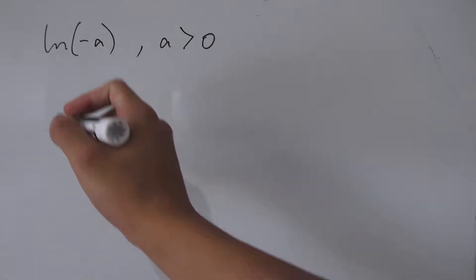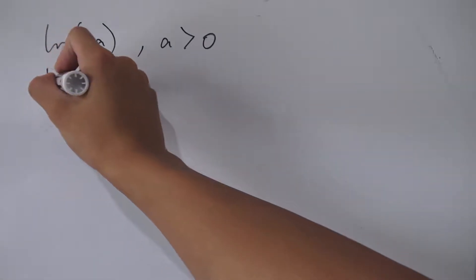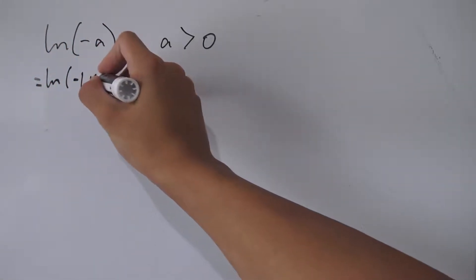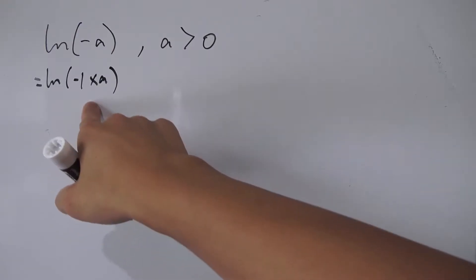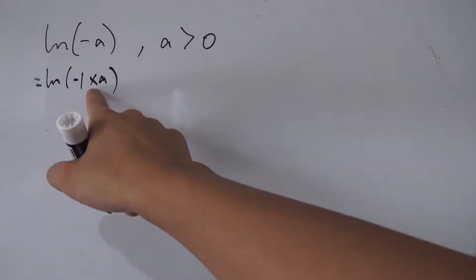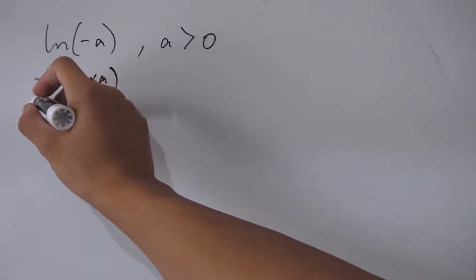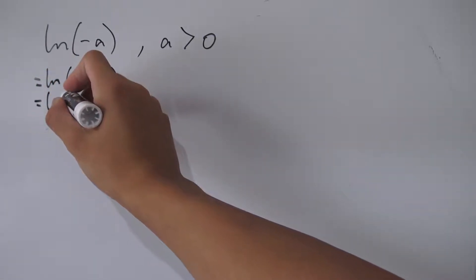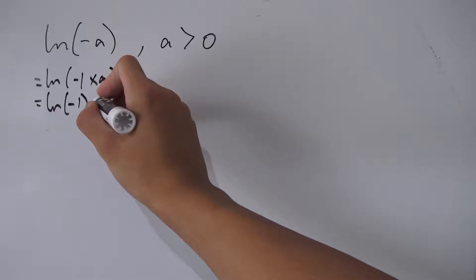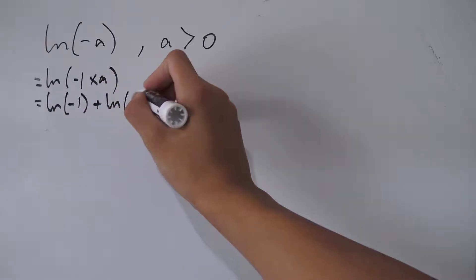Let's take a look at this natural log of negative a. Notice that this is the same as natural log of negative one times a. And if you know some natural log properties, you know that you can turn the multiplication of the argument into the addition of logs. So this is the same as natural log of negative one plus the natural log of a.